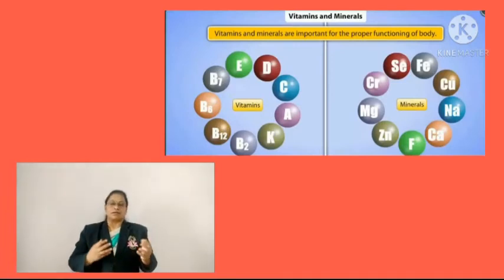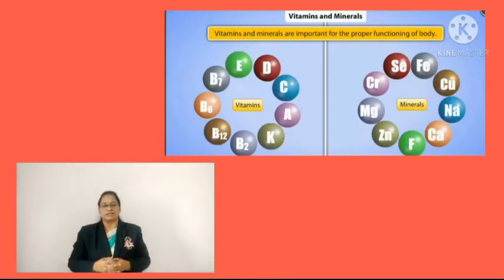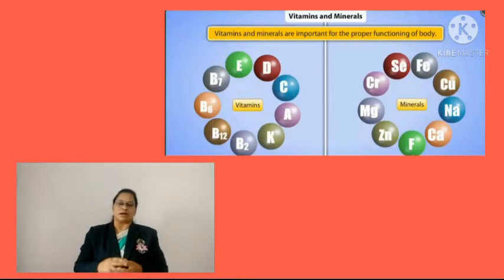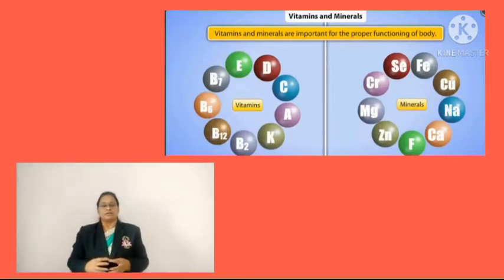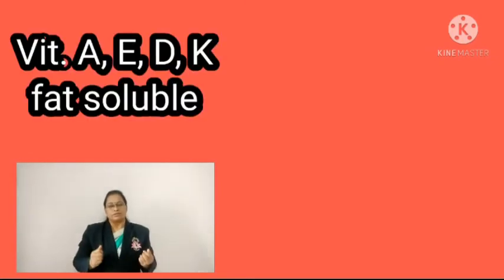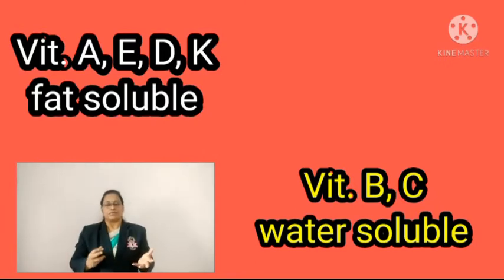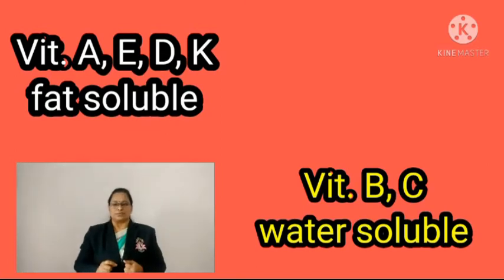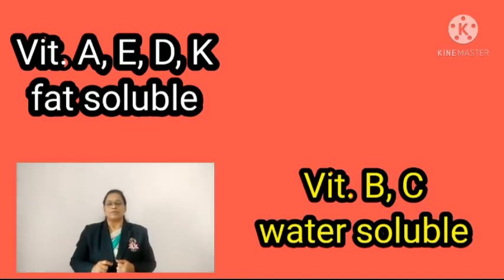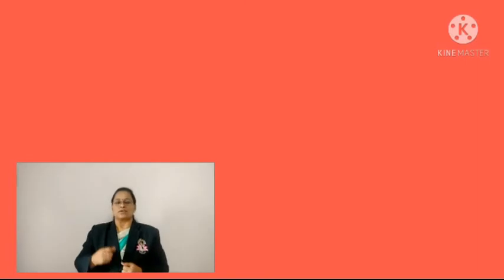Next are micromolecules: vitamins and minerals. There are six types of vitamins needed by our body — A, B, C, D, E, and K. Various minerals are also very useful. Vitamins A, D, E, and K are fat-soluble vitamins, while B and C are water-soluble vitamins. They are needed in very less quantity but are very useful. Let's see in the chart the sources and deficiency diseases caused by these vitamins and minerals.